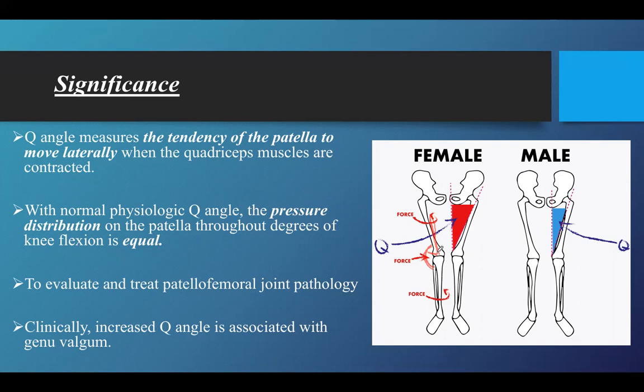When the patella has a Q-angle within normal ranges, there is equal distribution of pressure throughout all movements of knee flexion — whether at zero degrees, 90 degrees, or full range of motion. The pressure distribution throughout the patella is uniform, which is very important for preventing patellofemoral pathologies.